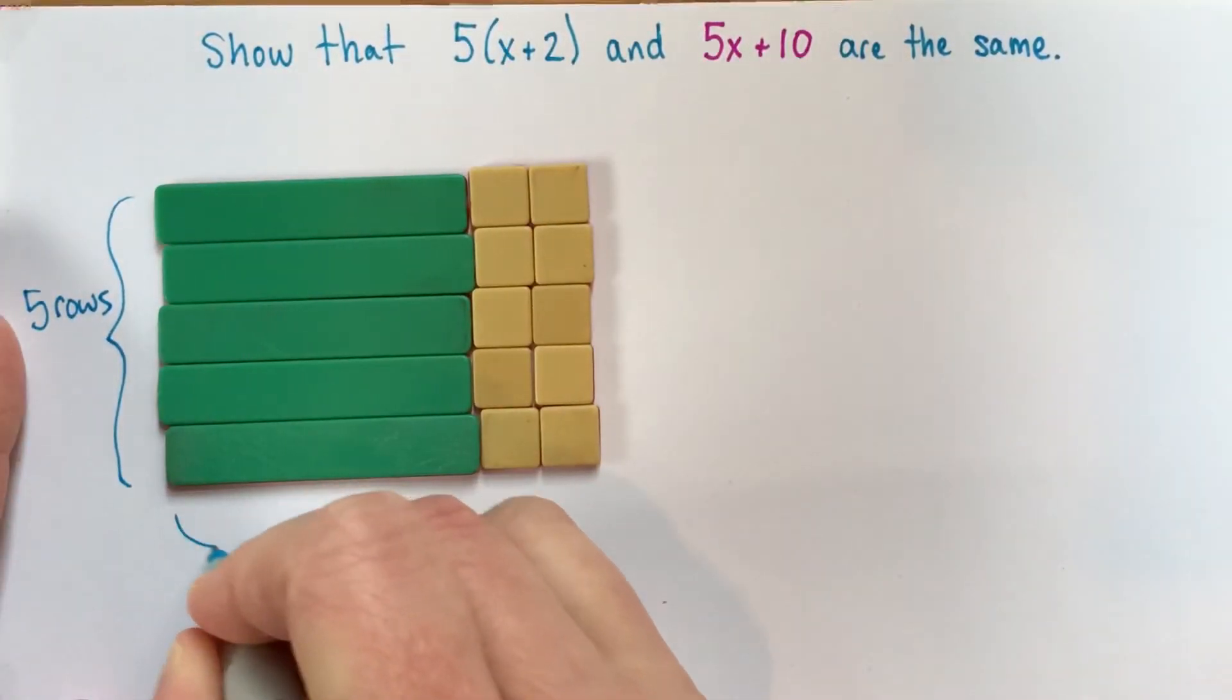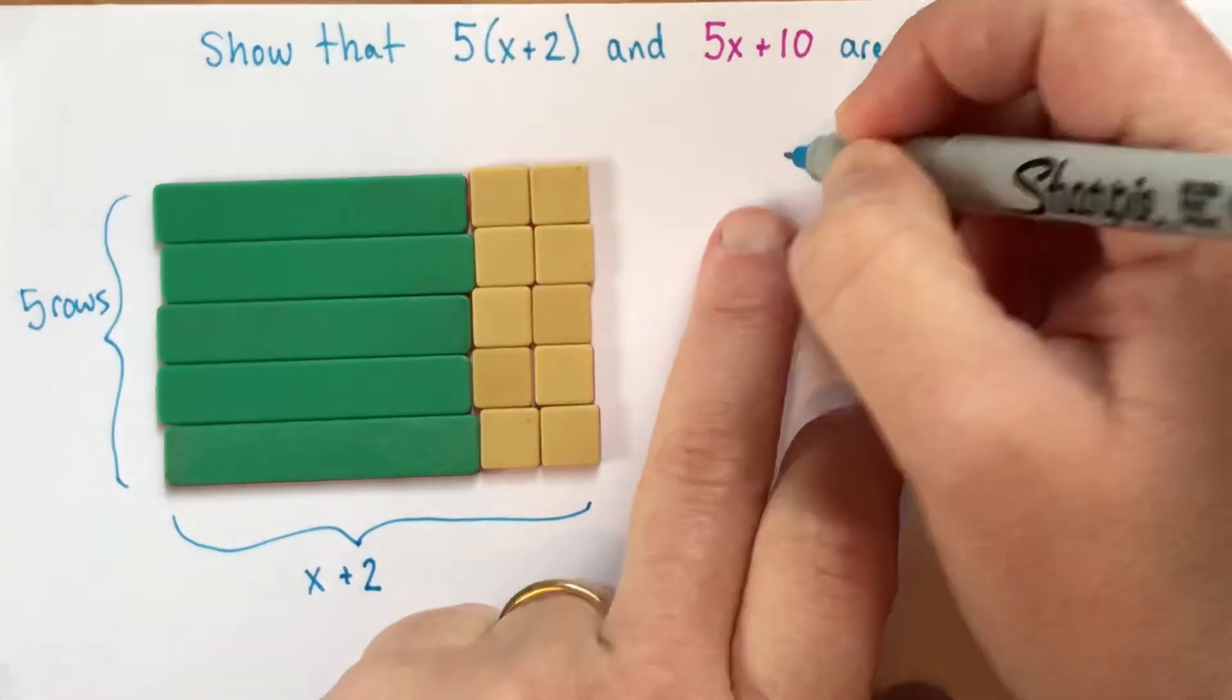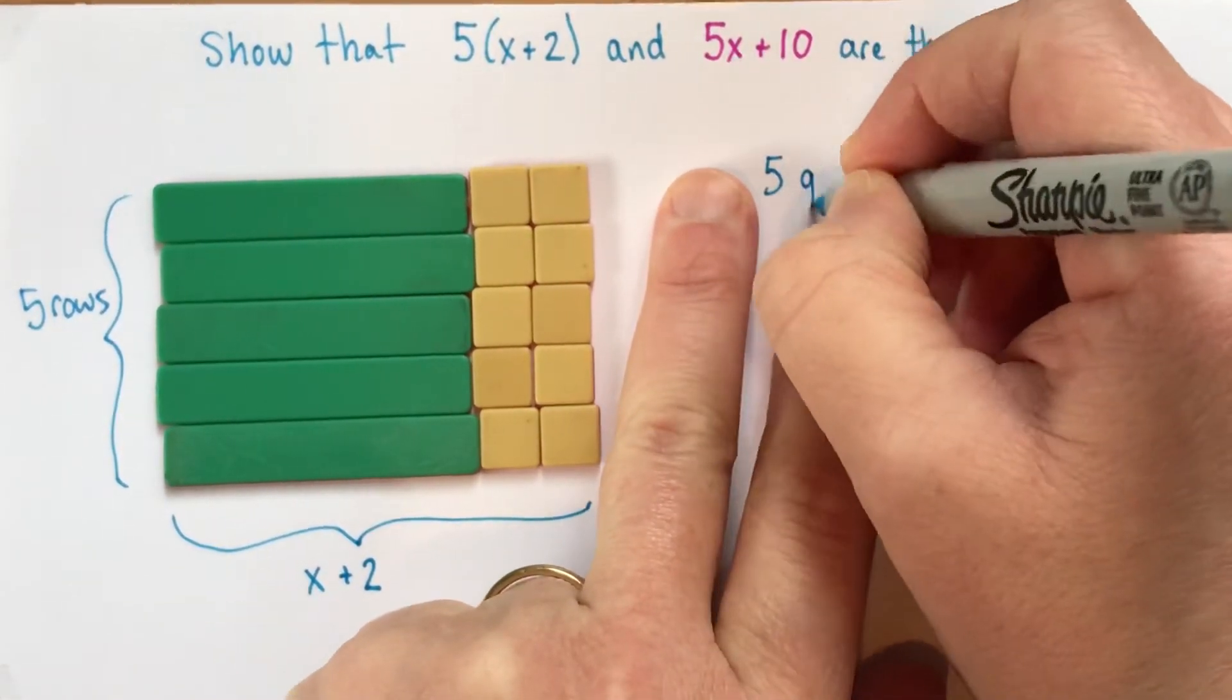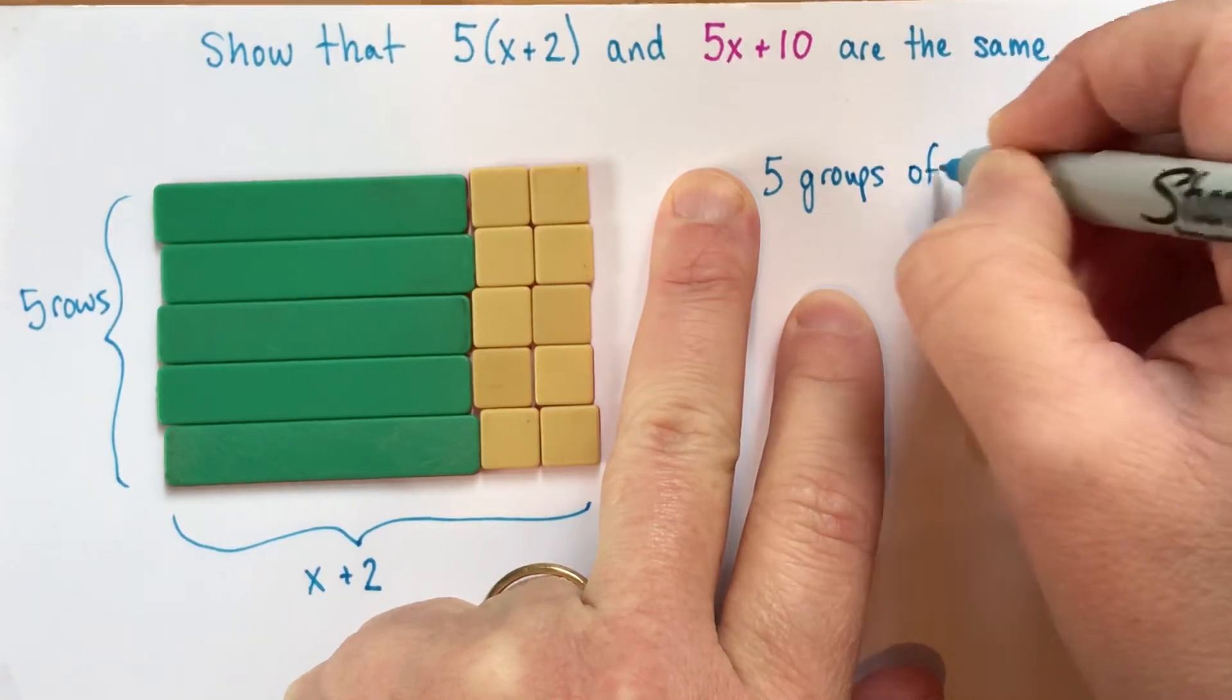and in each row, there's x plus 2. So we have 5 groups of x plus 2.